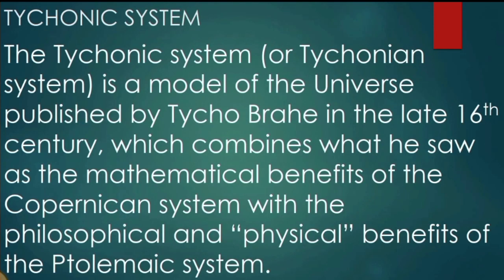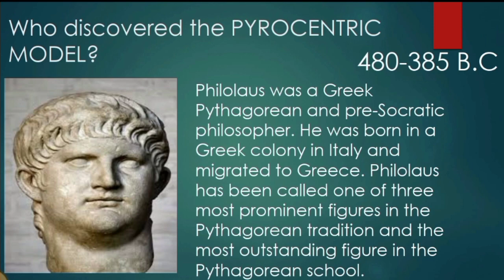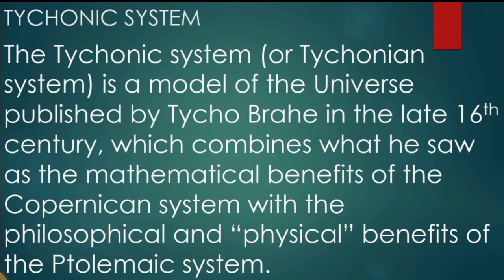Moving on, we have the tyconic system — the last model we'll discuss today. The tyconic or Tychonian system is a model of the universe published by Tycho Brahe in the late 16th century. It combines what are seen as the mathematical benefits of the Copernican system with the philosophical and physical benefits of the Ptolemaic system.